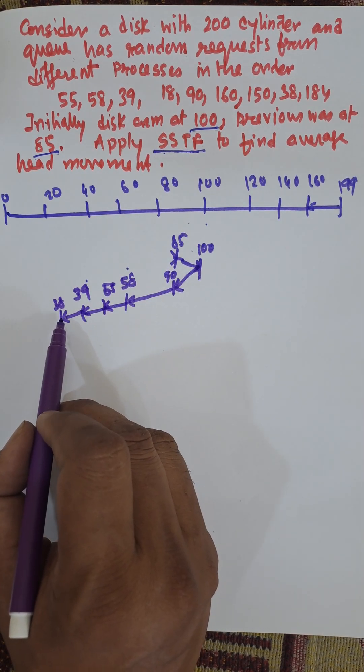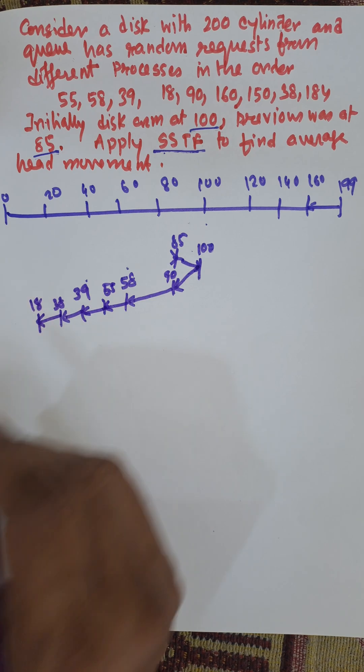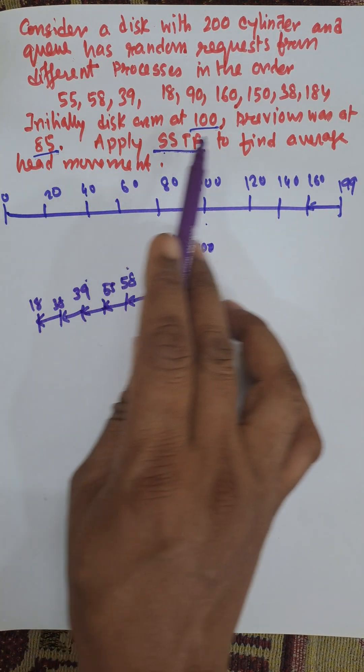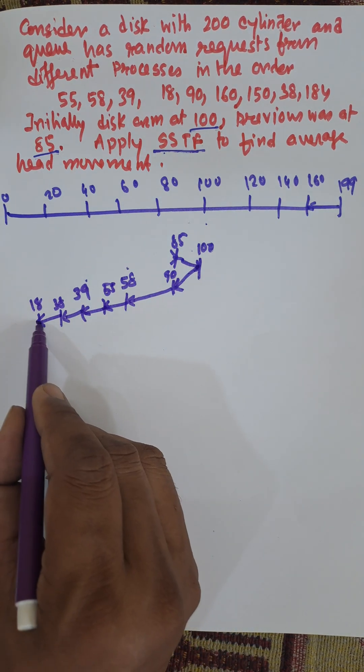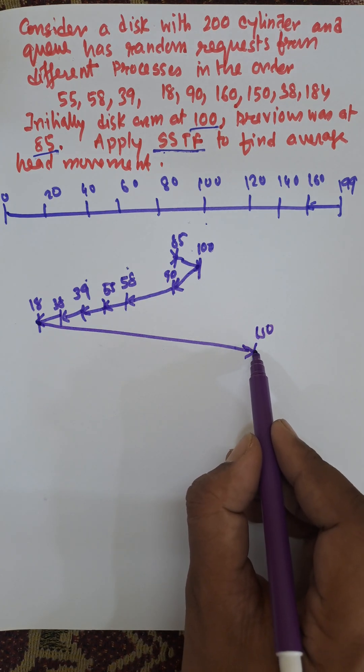Next from 18 we need to move to 150. This one is 150. Then from 150 to 160. Then from 160, the last one is 184.